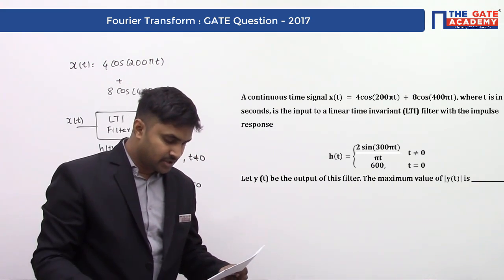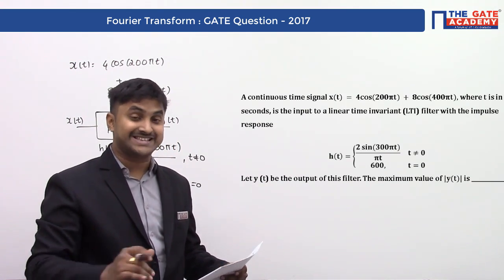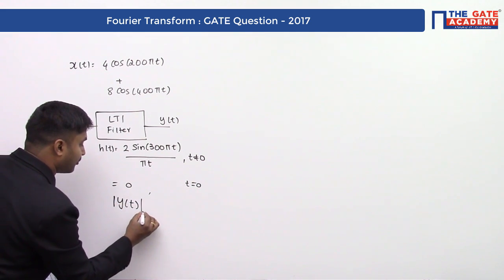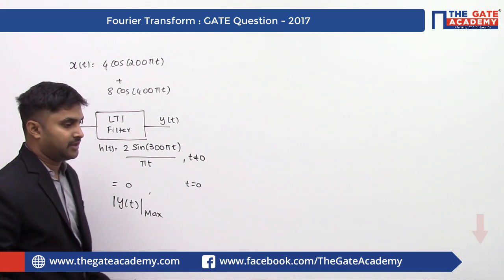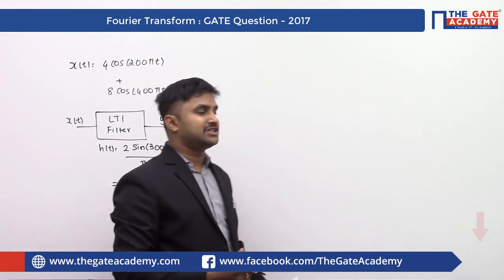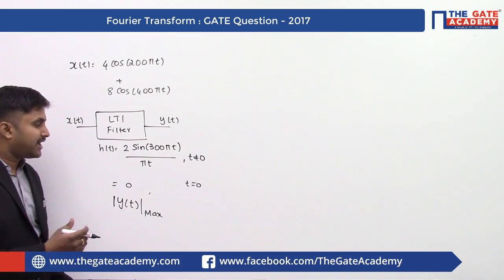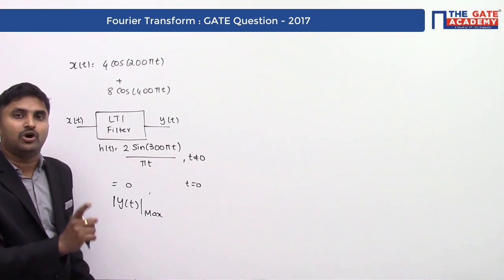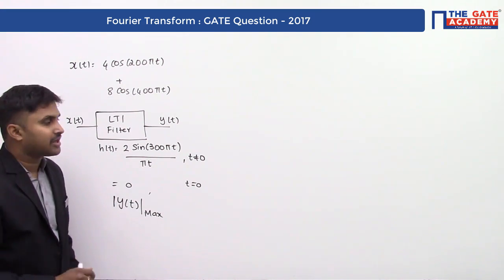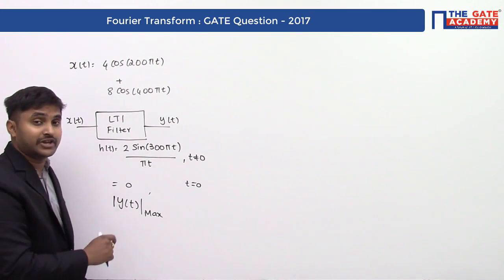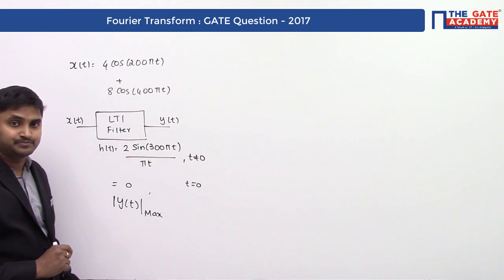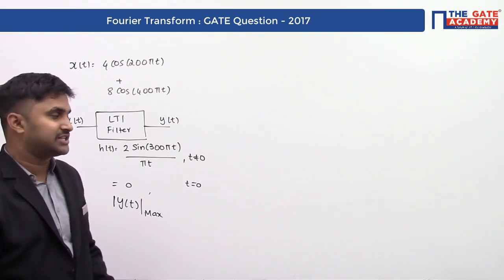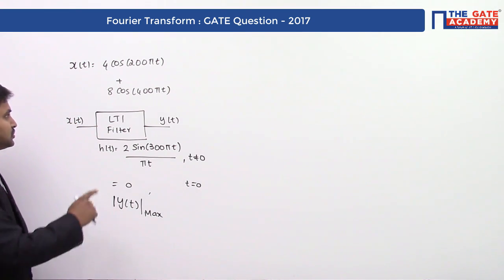The question asks for the maximum value of |y(t)|. This question is excellent because it requires knowledge of two topics: LTI systems — where convolution is the way to find the output y(t) from x(t) and h(t) — but we cannot only use LTI systems; we should also use the concept of Fourier transform.